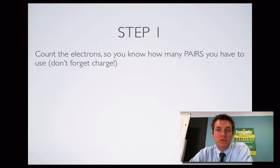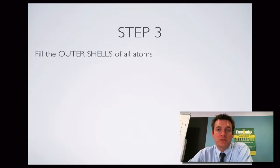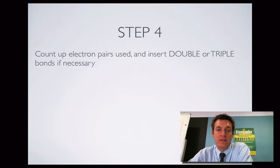Here are the rules. Step one is to count the electrons that you've got, so that you know how many pairs you have to use, not forgetting the charge on the substance if there is a charge. Step two is to join all the atoms to the central atom using single bonds. Step three is to fill the outer shells of all the atoms. Step four is to count up the electron pairs that you've used so far and insert any double or triple bonds if necessary — this is a way of cutting down on the number of electron pairs if you've used too many.